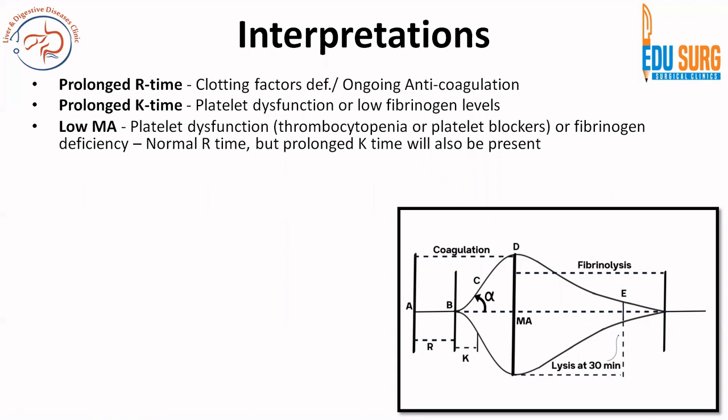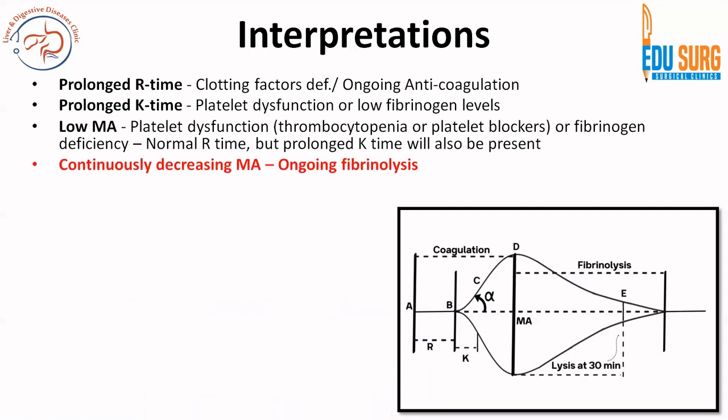This picture — normal R time with prolonged K time and low MA — can be seen in diseases where you have platelet dysfunction or fibrinogen deficiency. A continuously decreasing MA, as you do this test two or three times, is a marker of ongoing fibrinolysis. A high clot lysis index, meaning clot lysis is around 30 to 40% at 30 minutes, indicates an increased risk of bleeding because the clot is lysing very rapidly.